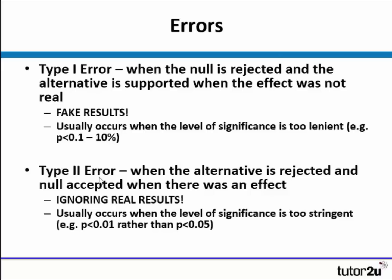A type 2 error is the opposite — this is where you reject your alternative hypothesis and accept your null, thereby ignoring real results. This probably happens when your level of significance is too stringent, for example, requiring results to be significant at the 1% level rather than 5%.